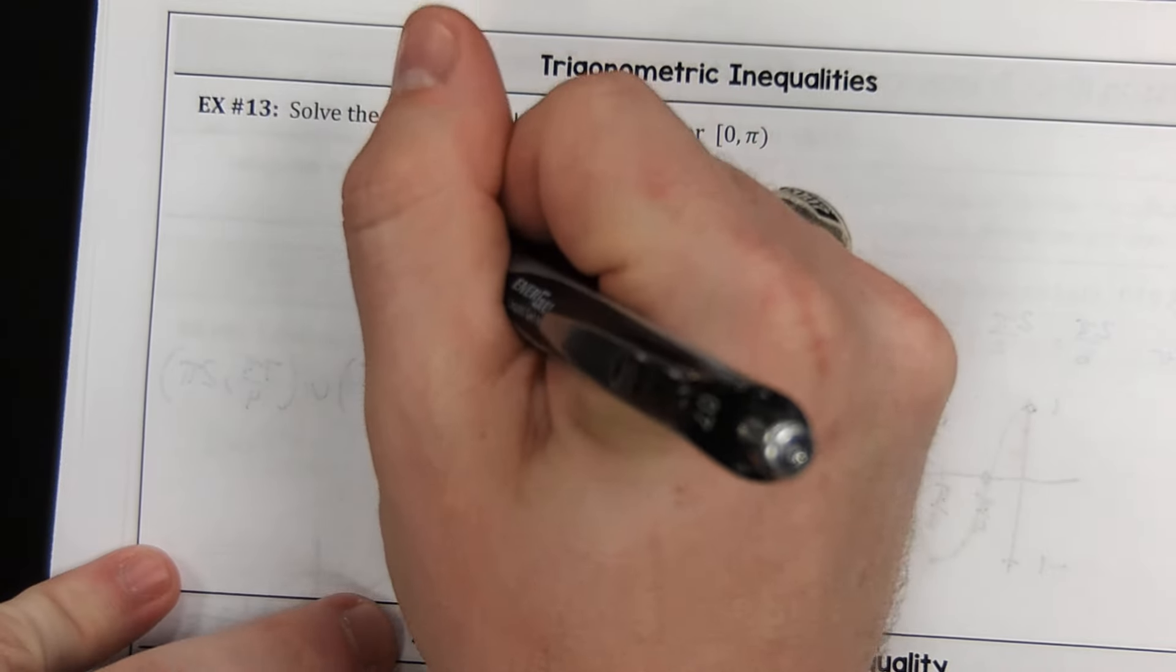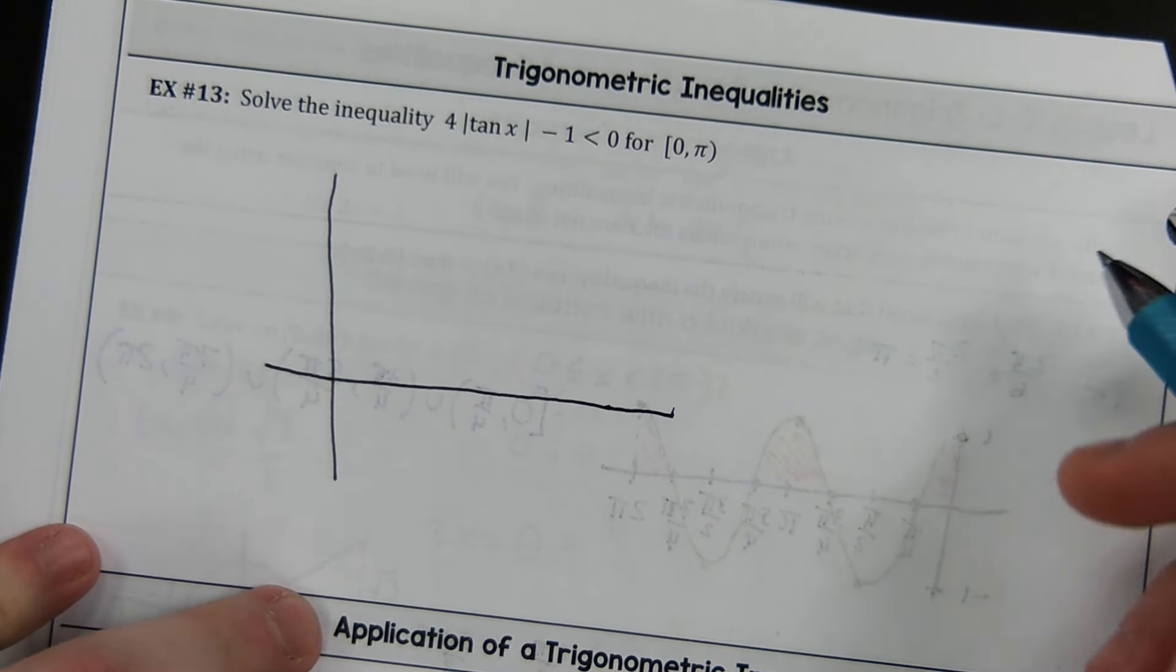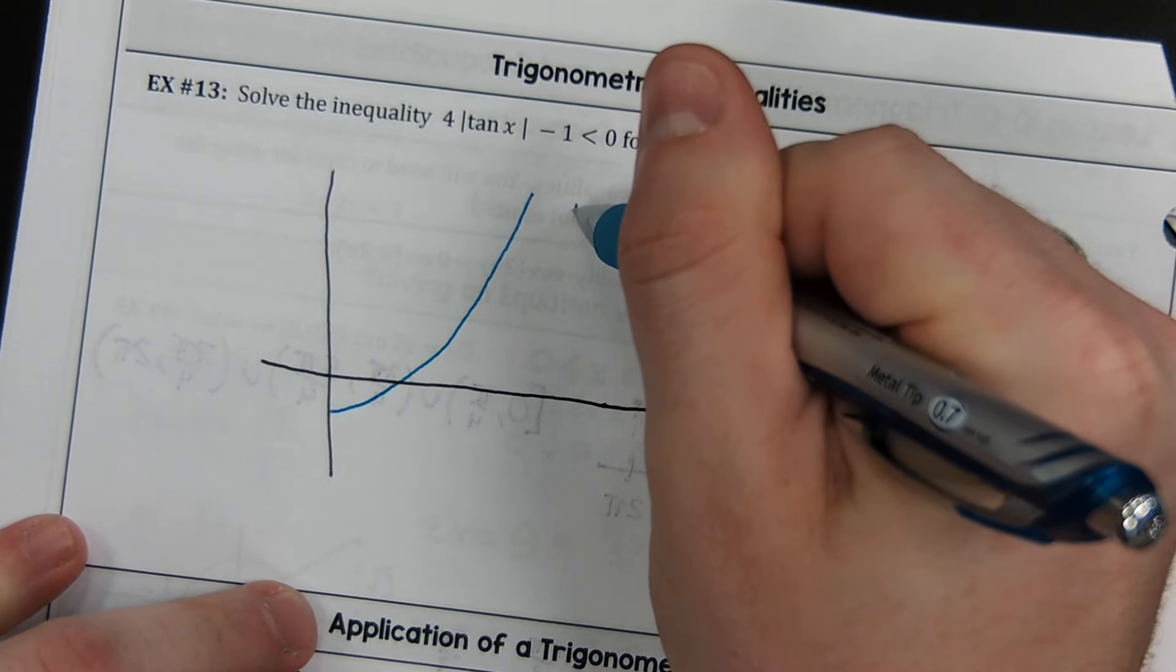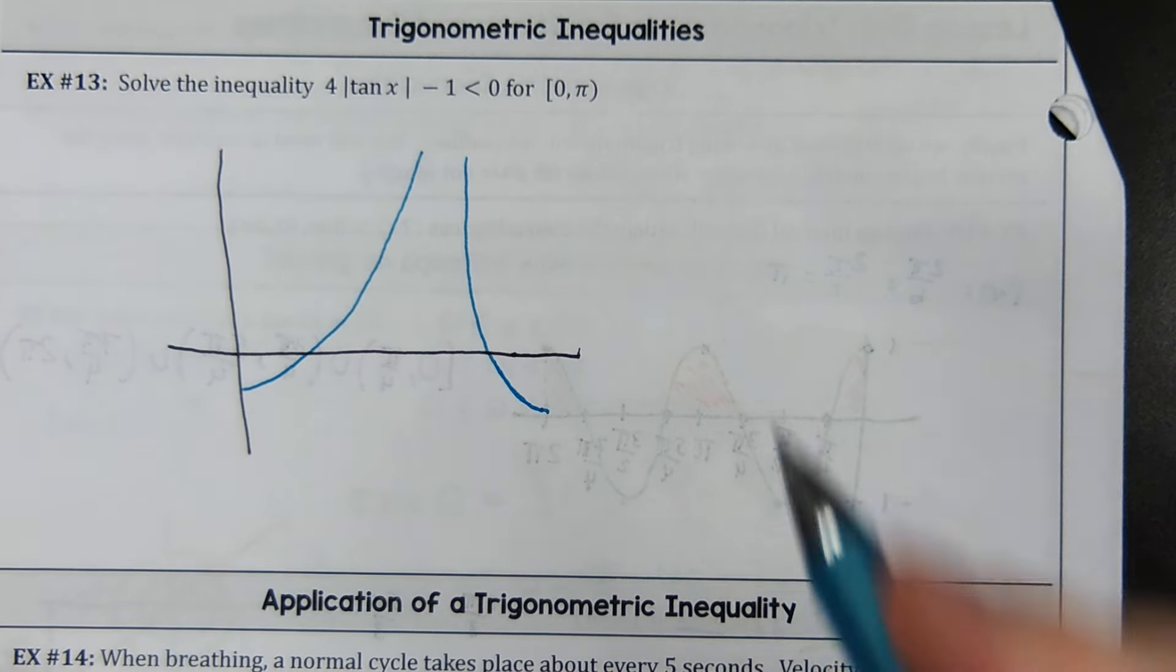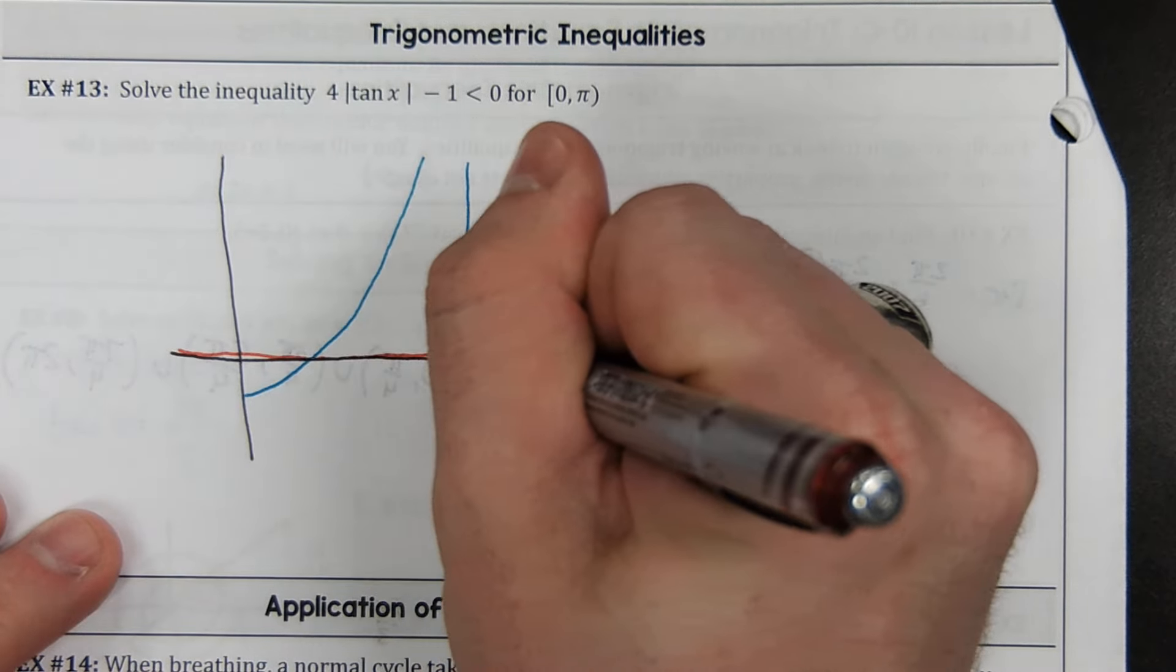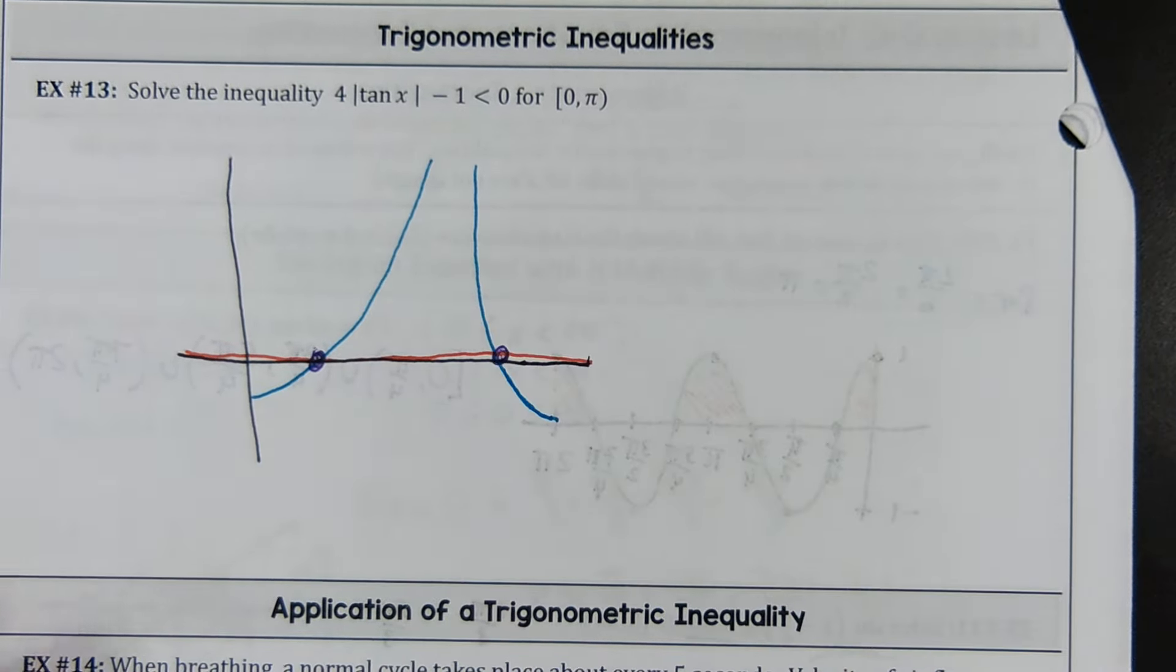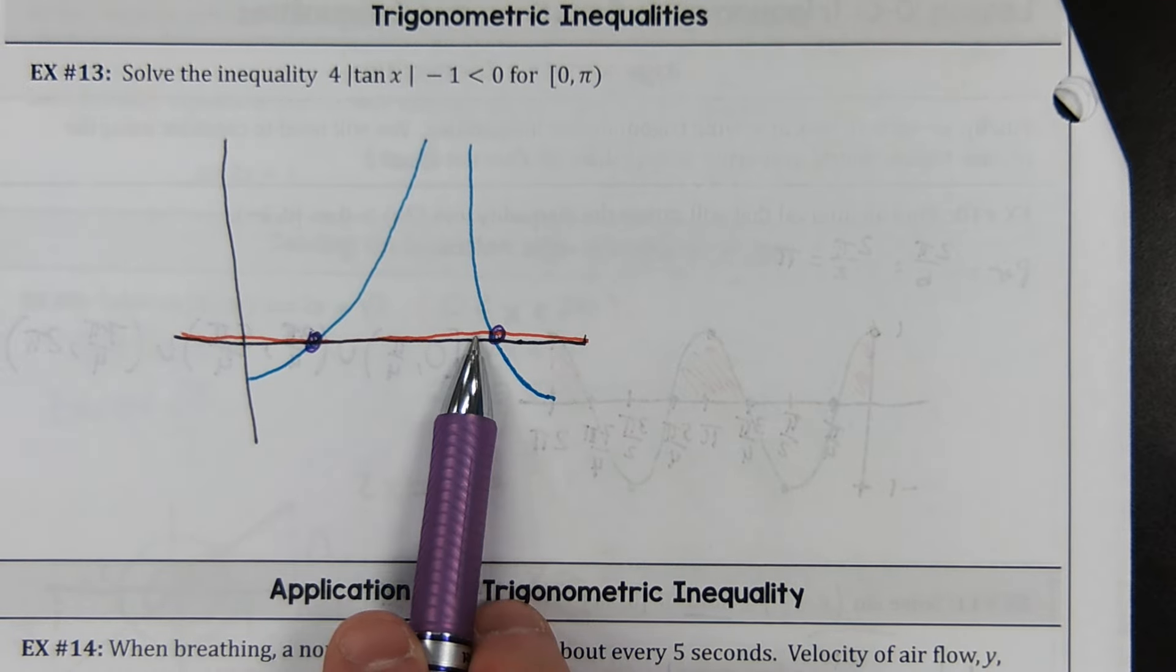And there it is. So rough sketch. It graphed 4 absolute tangent x minus 1 like this. I mean, it's as ugly as it gets. Oh goodness. Because it really doesn't matter. We want to know where we're less than 0. And of course I did this. I graphed my secondary line like that. So less than 0. I need to know where that number is. And I need to know where that number is. And that's it.